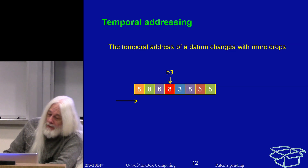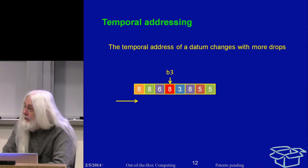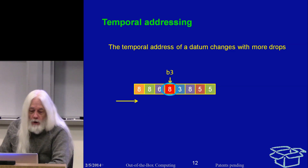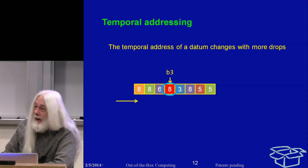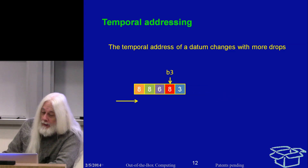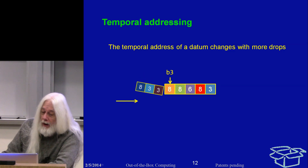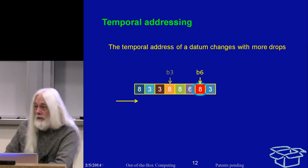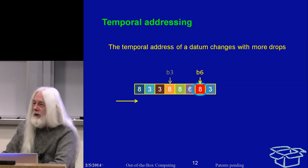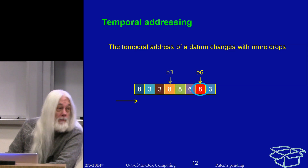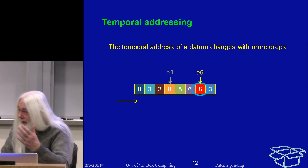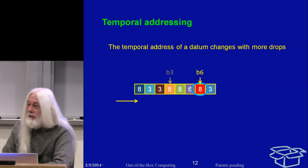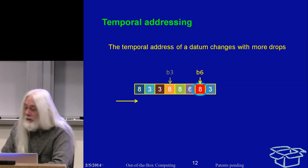A consequence is that every time you do a new drop on the front, everybody's temporal address changes. If we want to reference a particular value that is B3 now, as soon as a few more values drop onto the belt, B3 refers to somebody else and that value is now B6. This is truly awful to track by hand. The Mill is not designed to be an assembly language target. However, this is trivial for a compiler to keep track of — no more difficult than register coloring and similar problems.